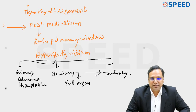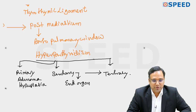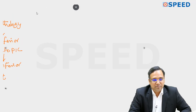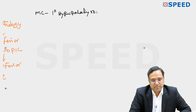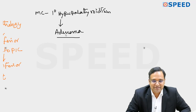For exam purposes, the most common cause of primary hyperparathyroidism is parathyroid adenoma. This adenoma is also more commonly seen with the inferior glands.